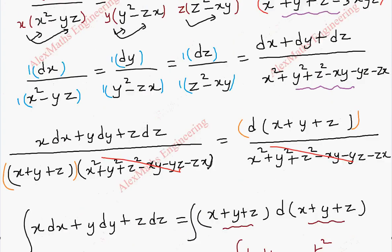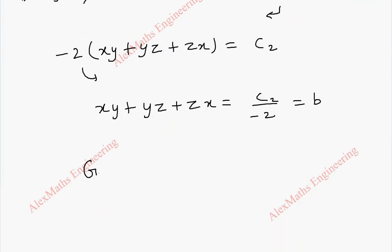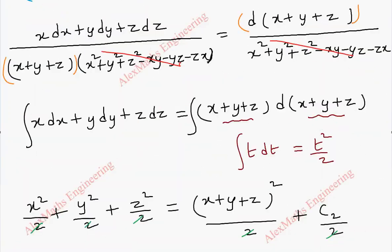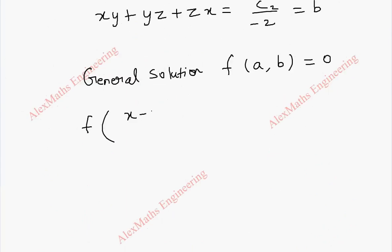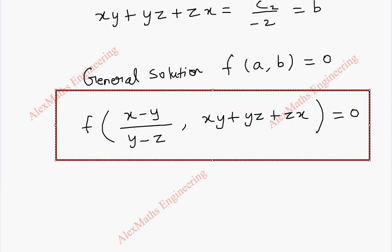Taking c1 as a and c2 as b, the general solution is of the form f(a, b) equal to 0. So the general solution is f of (x minus y)/(y minus z) comma (xy plus yz plus zx) equal to 0. We have obtained the general solution for the given partial differential equation using Lagrange's multiplier method.